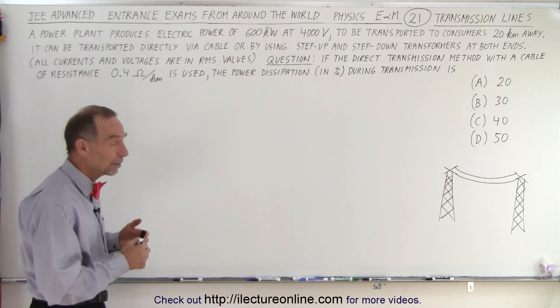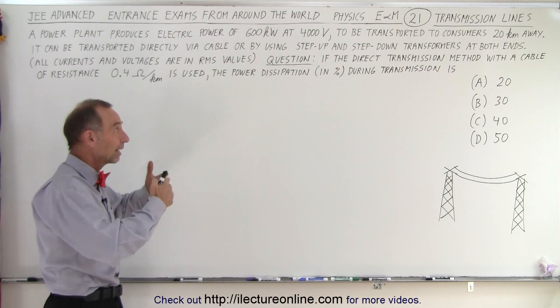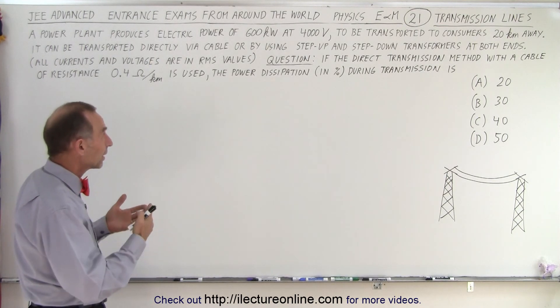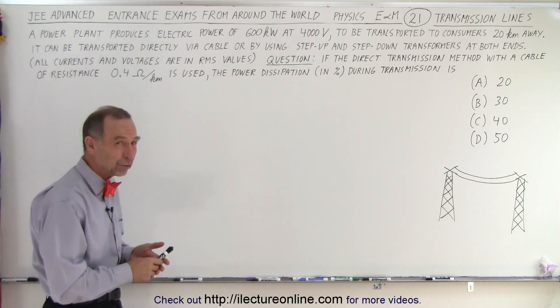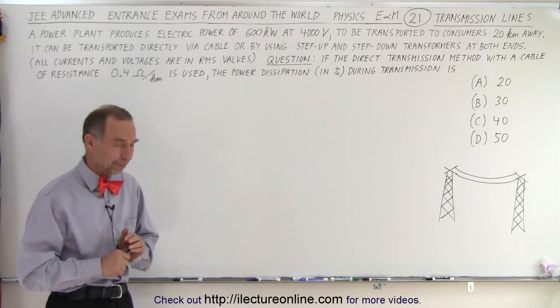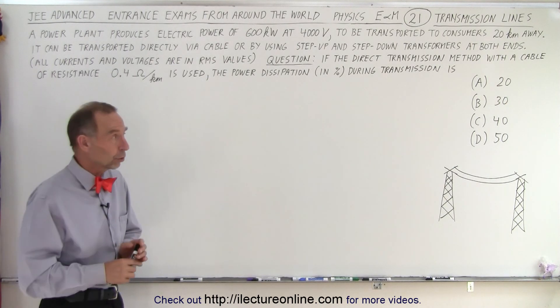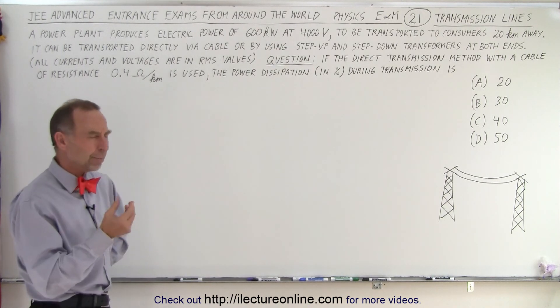So here, we're supposed to figure out what is the percentage of the total power that's produced that is actually lost because of the heat dissipation, the power dissipation in percent. And notice the answers, anywhere from 20 to 50 percent is the correct answer. Even at 20 percent, that's a huge loss which you don't want. But at least, let's calculate it. How do we go about doing that?